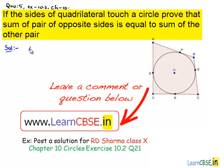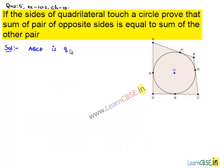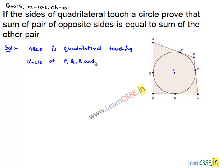Consider a quadrilateral ABCD that is touching a circle with center O at four points that are respectively P, Q, R and S. He asked us to prove that sum of one pair of opposite sides, that is AB plus CD, is equal to sum of other pair, that is AD plus BC. This is the proof we are required to prove.